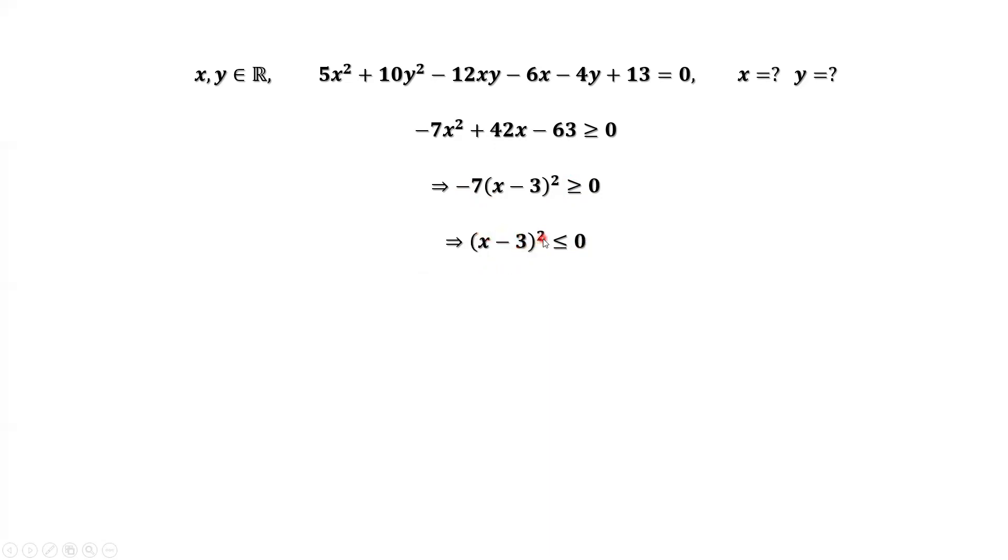Anything squared must be greater than or equal to zero. So the left-hand side is less than or equal to zero, and at the same time, it's greater than or equal to zero. Combining both conditions, this implies x - 3 must equal zero.